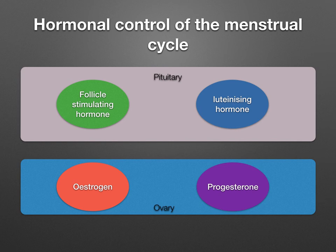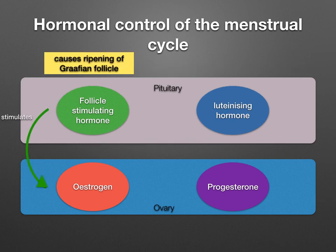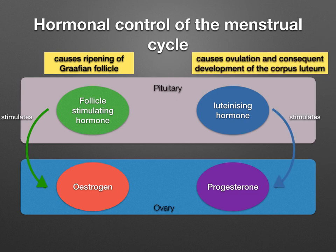The ovary also produces hormones: oestrogen and progesterone. The function of follicle-stimulating hormone is that it causes the Graafian follicles in the ovary to develop, and it also stimulates the ovaries to produce oestrogen. Luteinizing hormone causes ovulation to occur, and it stimulates the corpus luteum in the ovary to produce progesterone.